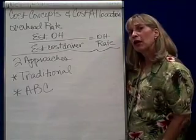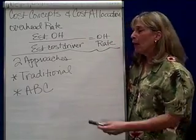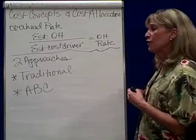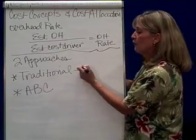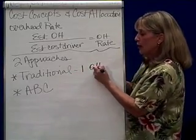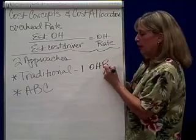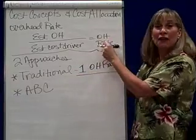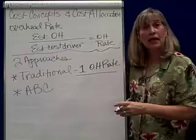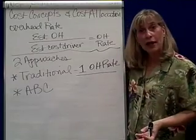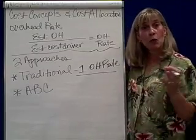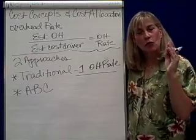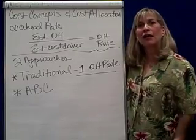There are two ways we can go about it. We can use the traditional method, and the traditional method says we have one overhead rate — only one for the whole business. We only have to calculate this one rate, and it's called the plant-wide rate, because it applies to the whole plant, the whole business.